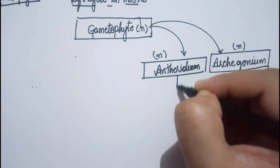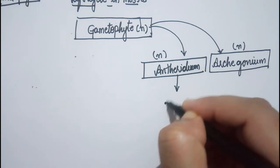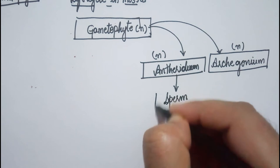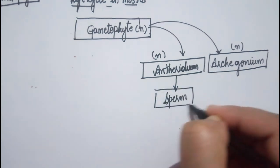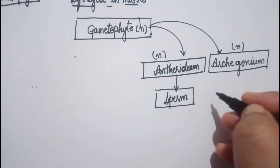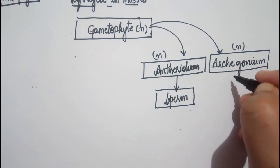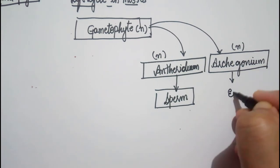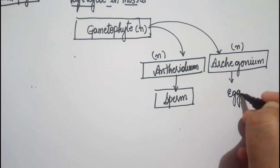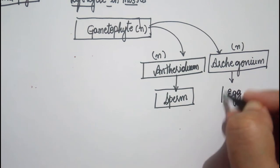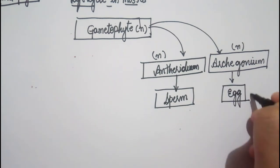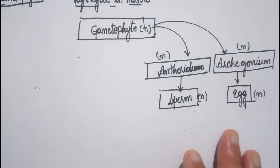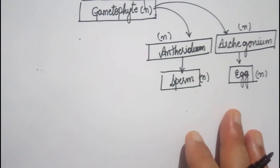The antheridium is going to produce the sperms, also called antherozoids. The archegonium is going to form the egg. Both the sperm and egg are haploid.